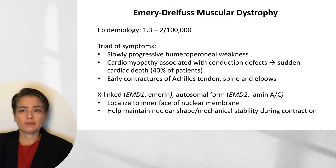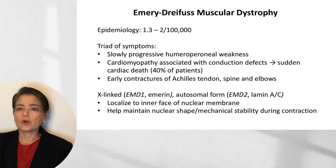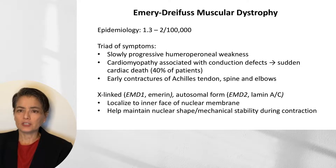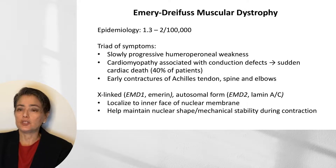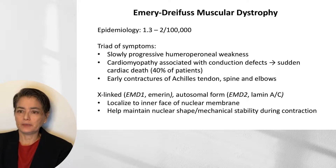Emery-Dreyfus muscular dystrophy is a rare disease occurring in about 1.3 to 2 per hundred thousand patients. It presents with a triad: slowly progressive humeroperoneal weakness; cardiomyopathy with conduction defects leading to sudden cardiac death in about 40% of patients; and early contractures particularly of the Achilles tendon, spine, and elbows. There are both X-linked and autosomal forms — the X-linked variant is due to mutations in the EMD1 gene encoding emerin, while the autosomal form is due to mutations in the LMNA gene encoding lamin-AC. Both proteins localize to the nuclear membrane interface and help maintain nuclear shape and mechanical stability during contraction.